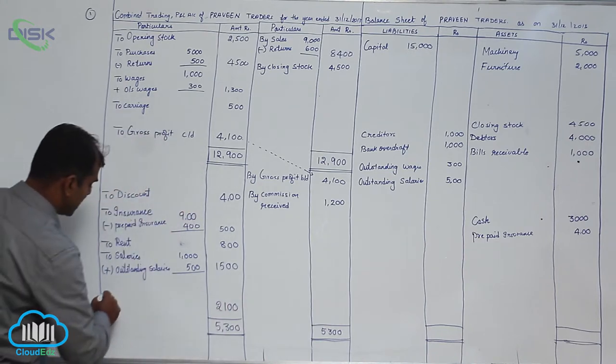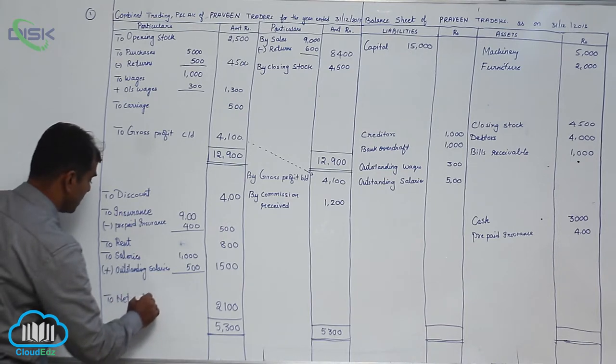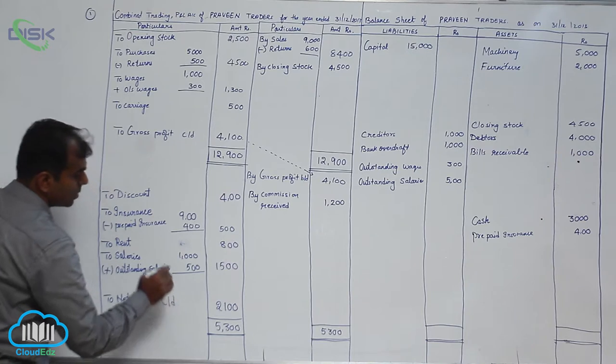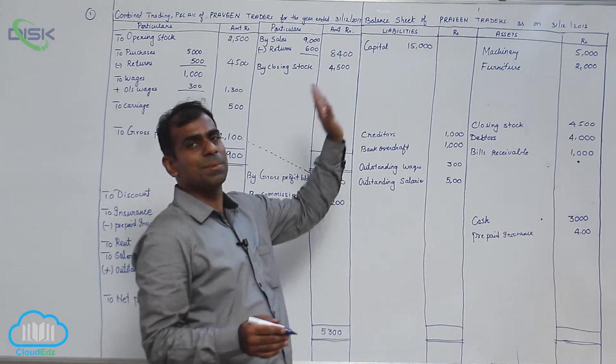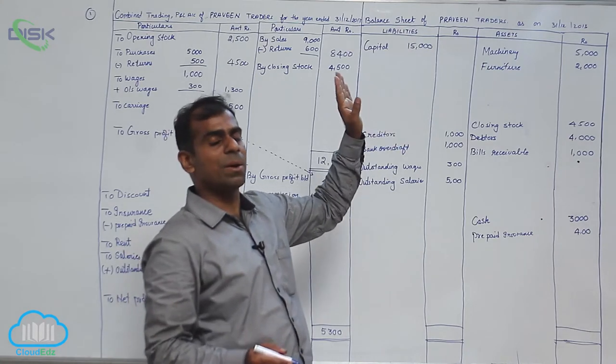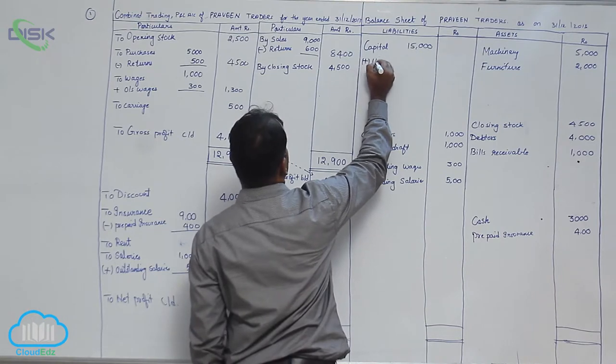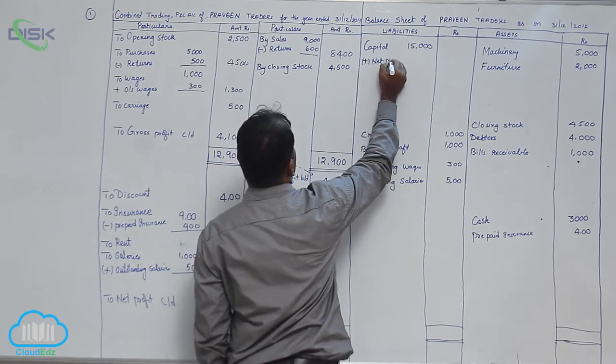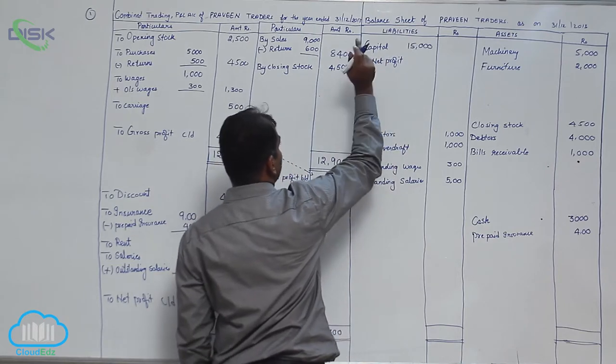So we will write it as to net profit carried down, $2,100. Now, what is the next thing? We should add this net profit to capital as it belongs to the owner. So we will say plus net profit here, because it belongs to the owner, and owner is nothing but capital here.